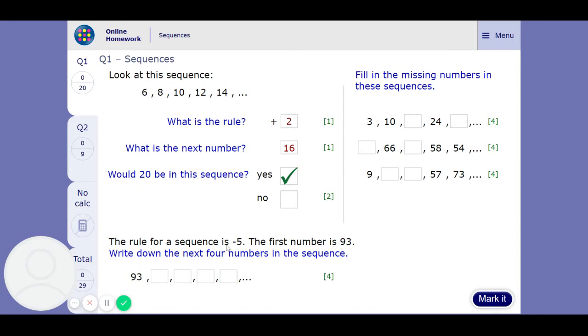The rule for a sequence is minus 5. The first number is 93. Write down the next four numbers in the sequence. So we start with 93 and we subtract 5 to get 88. Subtract 5 again you get 83. Subtract 5 again you're going to get 78 and 73.